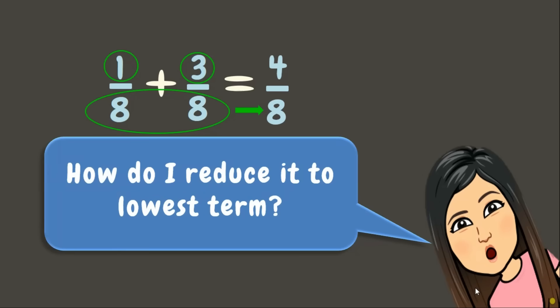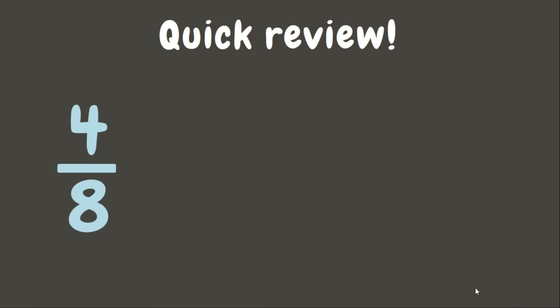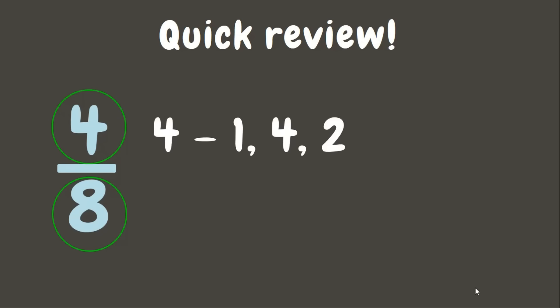How do we reduce it to its lowest term? Let's have a quick review. We can reduce a fraction to its lowest term by finding the greatest common factor of the numerator and denominator. Let's list down the factors of four and eight. The factors of four are 1, 2, and 4, while the factors of eight are 1, 2, 4, and 8.